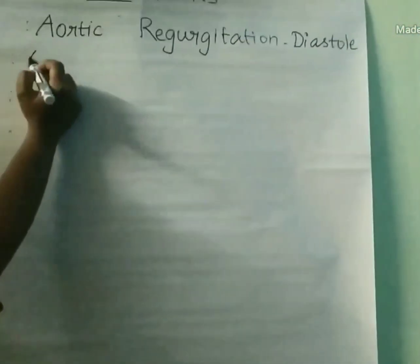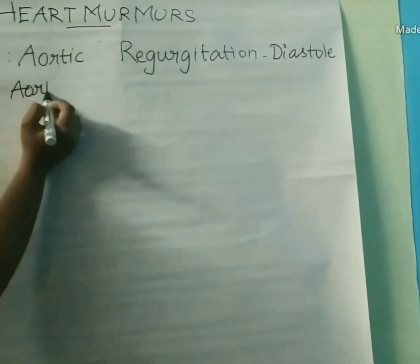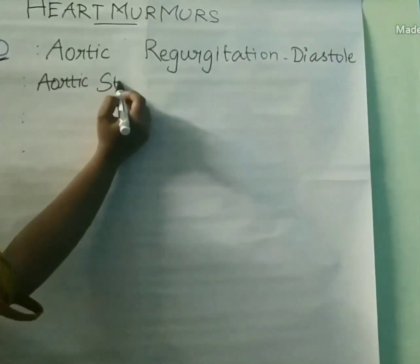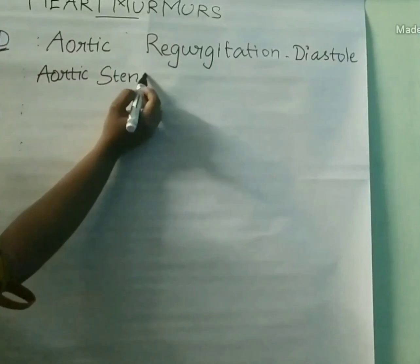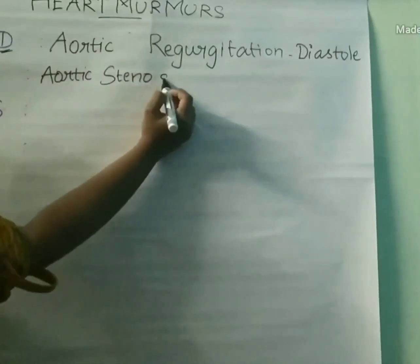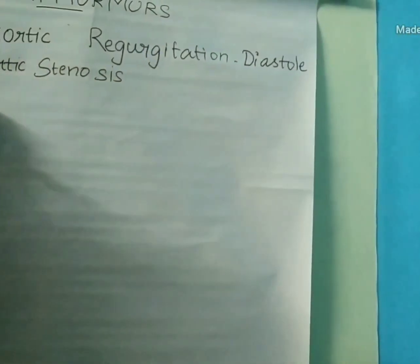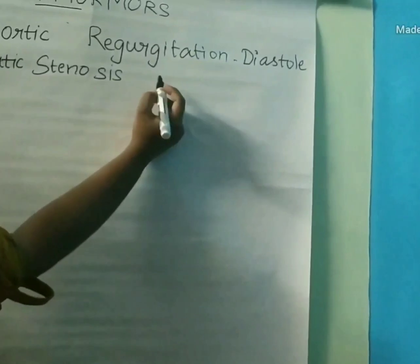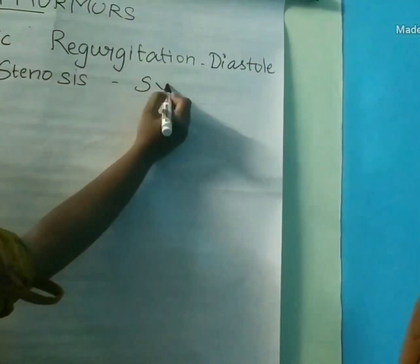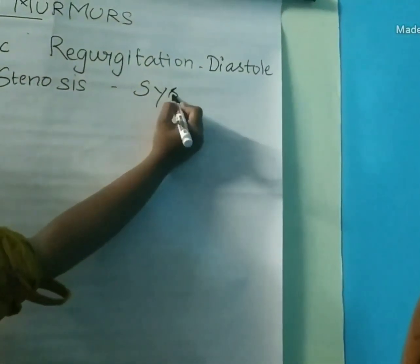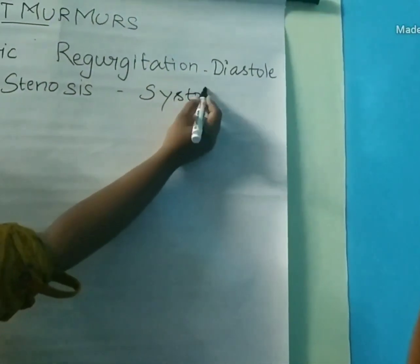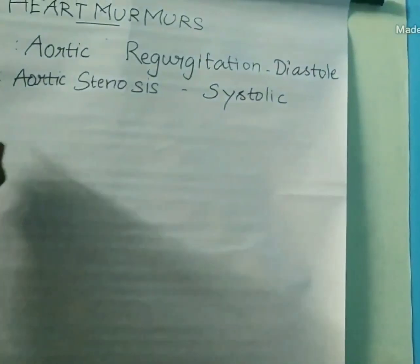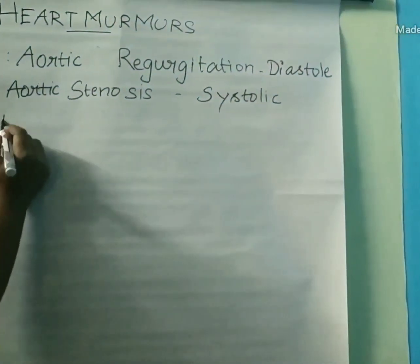Next, ASS — in which A and S stands for aortic stenosis, and the last letter S stands for systole. So in aortic stenosis condition, the murmur will be seen in systole. Systolic murmur is seen in aortic stenosis condition.